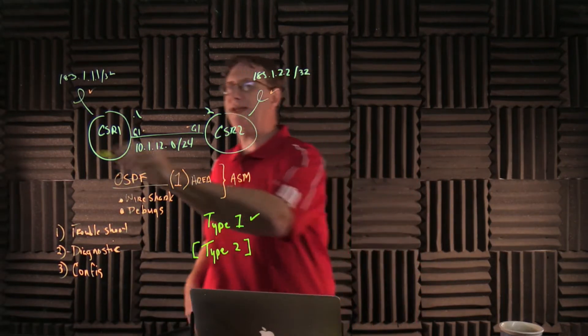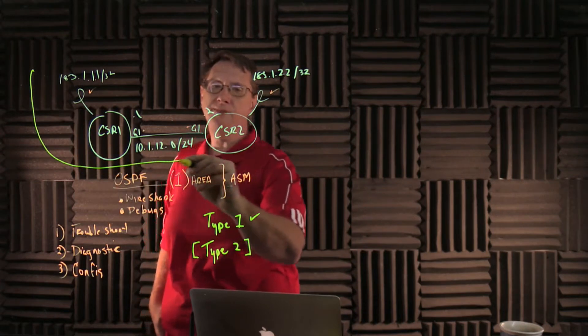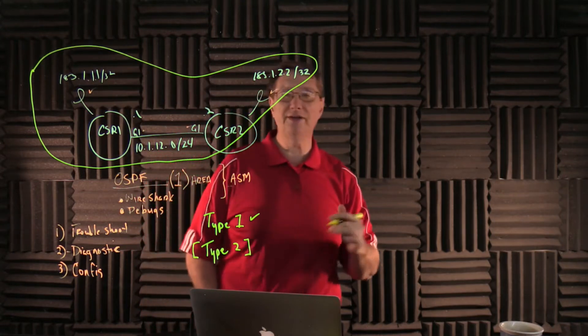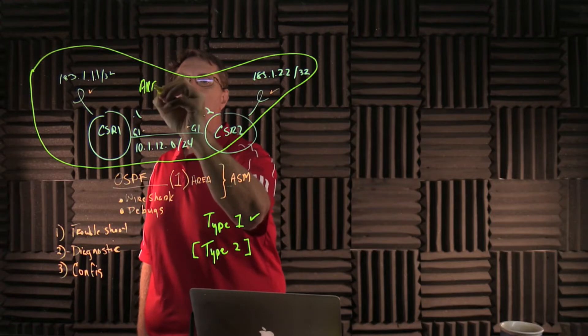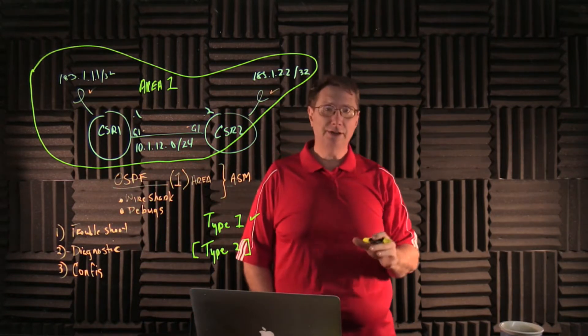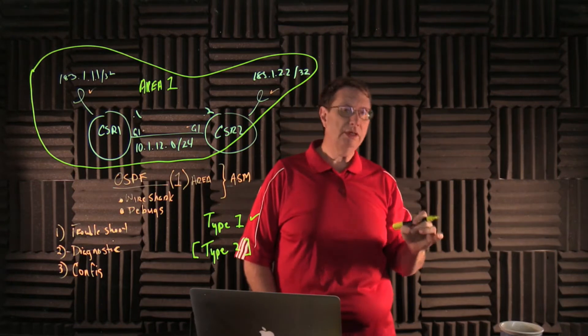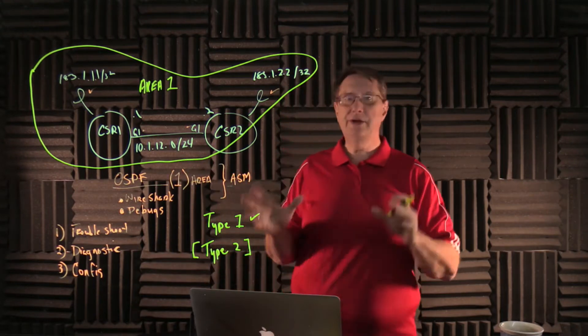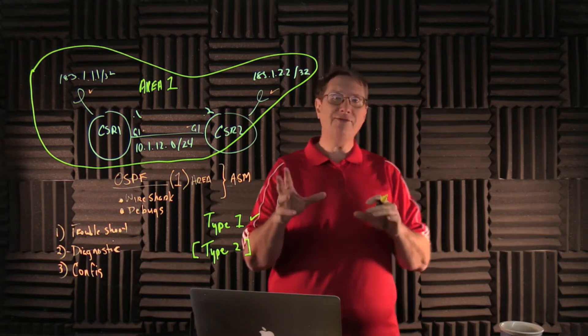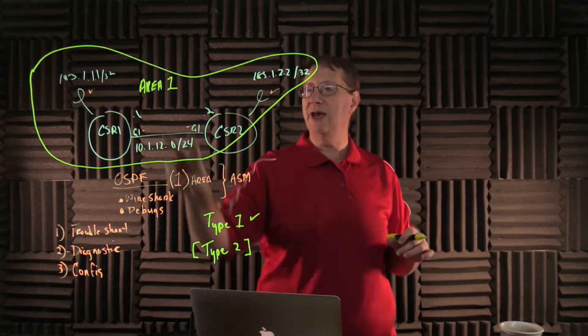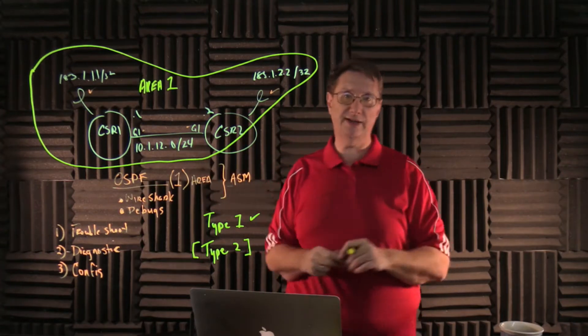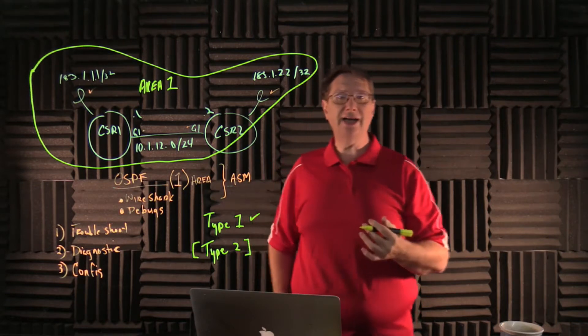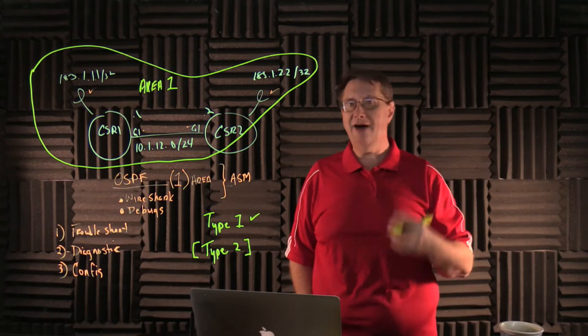Now what we've done so far is we have taken these two devices, and what we've done is we have taken these interfaces on these devices, and we have created an area. We called that Area 1. And I mentioned that we do not have to have an Area 0 if we have just one area. I could have called it Area 999, and it would have been perfectly fine. And what I've tried to do is I've tried to encompass the interfaces, the two loopbacks, and the physical interface between CSR1 and CSR2 in the current configuration. Now that means that inside of this area, some interesting things have already taken place.